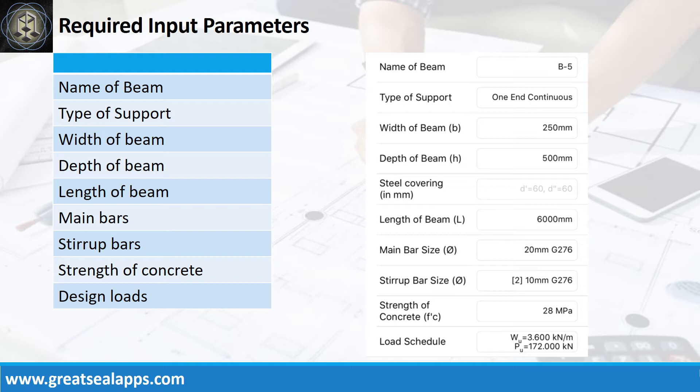Enumerating the required input parameters: strength of concrete is 28 MPa; factored uniform load is 3.6 kN per meter; and factored concentrated load is 172 kN.